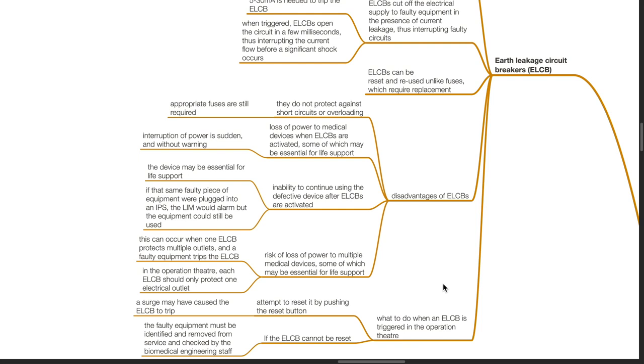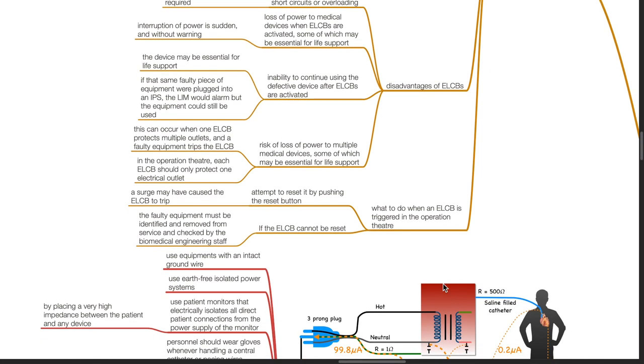Therefore in the operation theater, each ELCB should only protect one electrical outlet and should not be daisy-chained. What to do when an ELCB is triggered in the operation theater? First attempt to reset it by pushing the reset button; a surge may have caused the ELCB to trip. If the ELCB cannot be reset, the faulty equipment must be identified and removed from service and checked by the biomedical engineering staff.